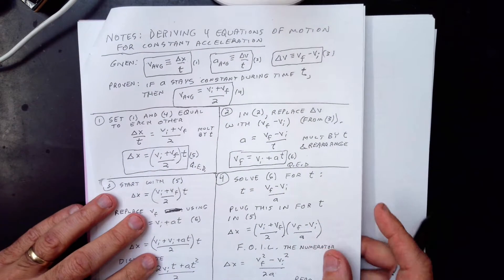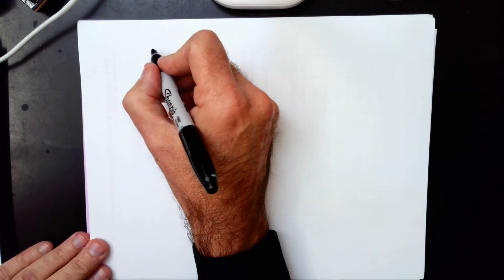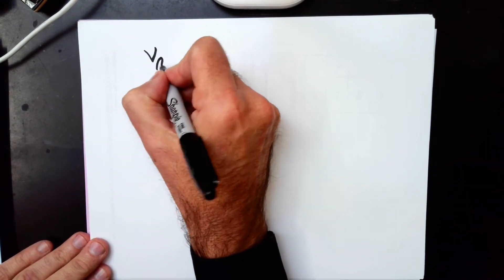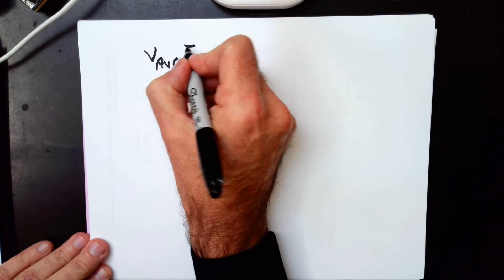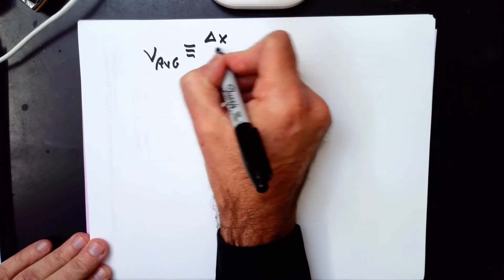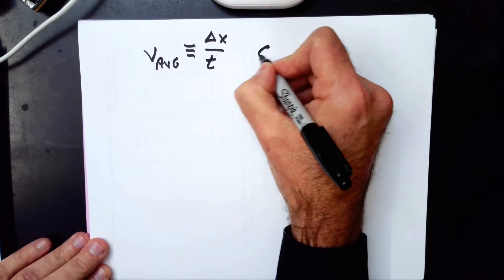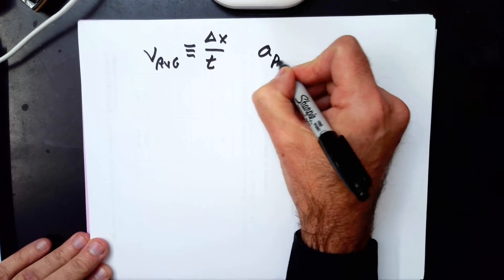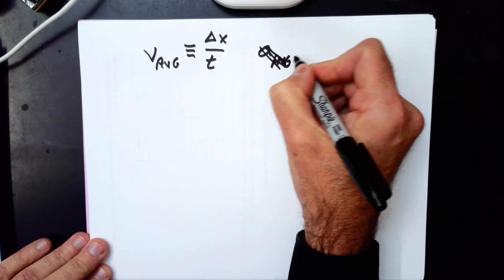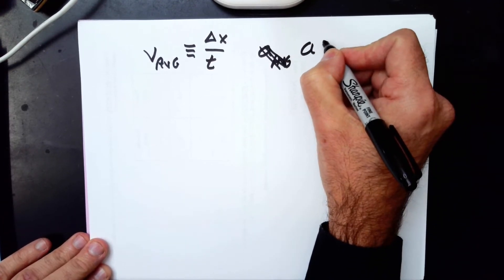You start with these equations up here. I'll write them down. You start with these definitions, like average velocity is defined as Δx over t. That's a definition. You start with the definition of average acceleration, which we can just call a, because a is constant in these problems. So a is defined as Δv over t.